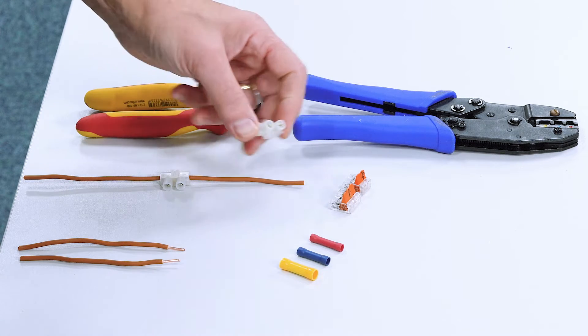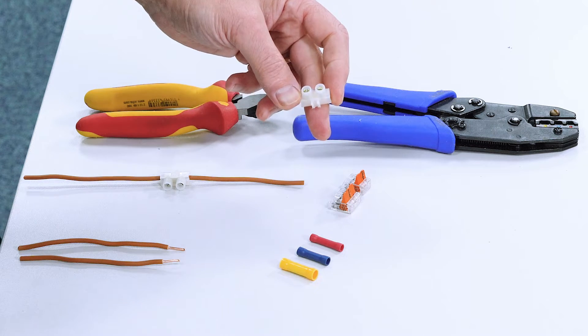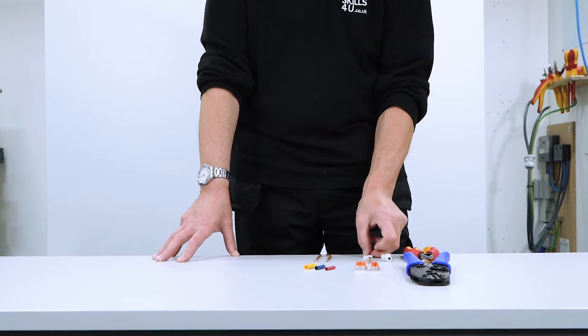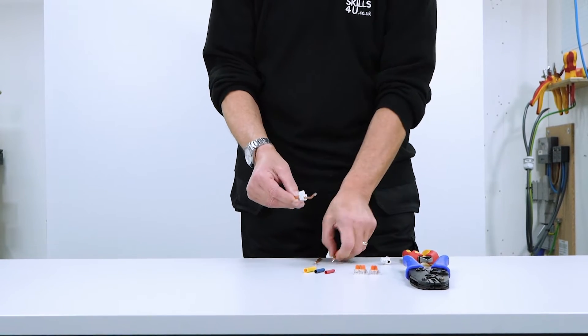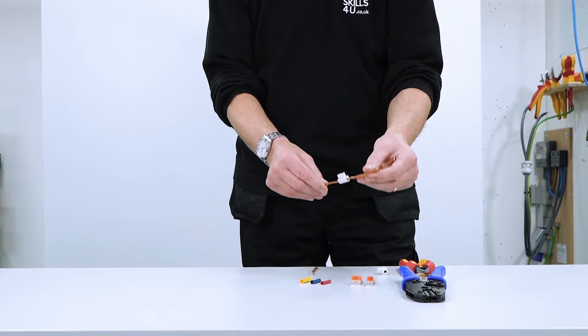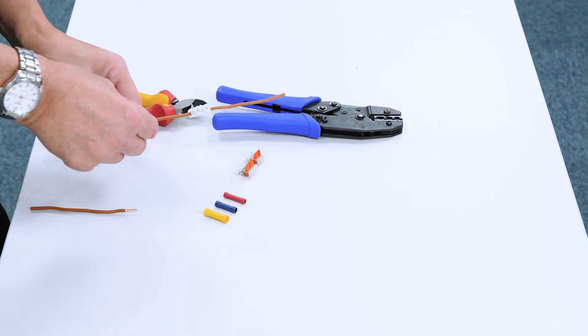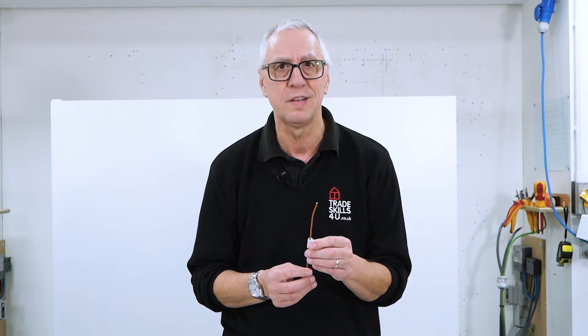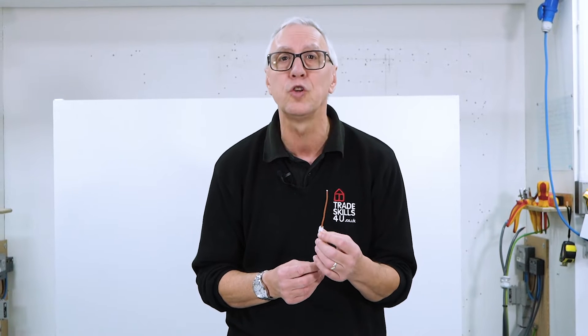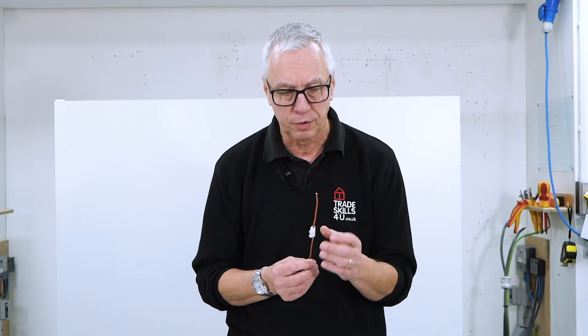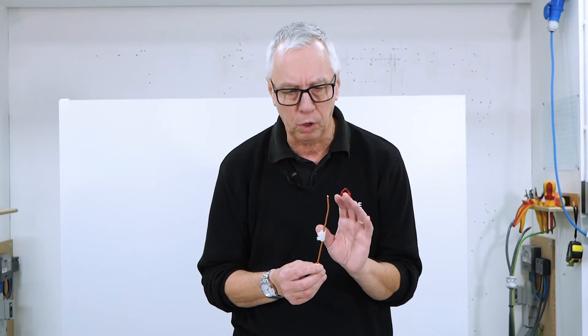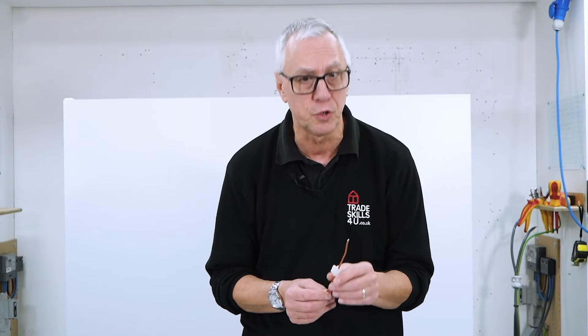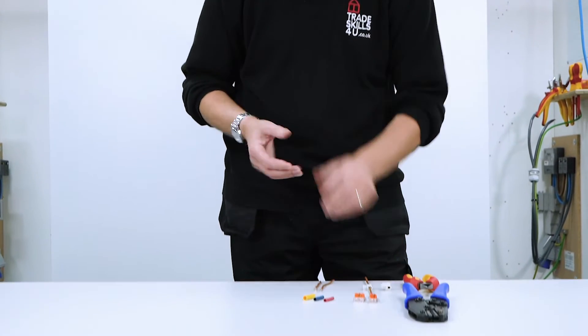Well, we have connector blocks and you've probably seen these around, they're very common. And I've just prepared one earlier there so you can just trim your conductors down and they just fasten in and screw down there. Now the problem with these is that they must always be in an enclosure. I've seen these buried in a wall before today, which isn't ideal because screw terminals can come loose. So never bury these in a wall, always make sure that they're in an enclosure.